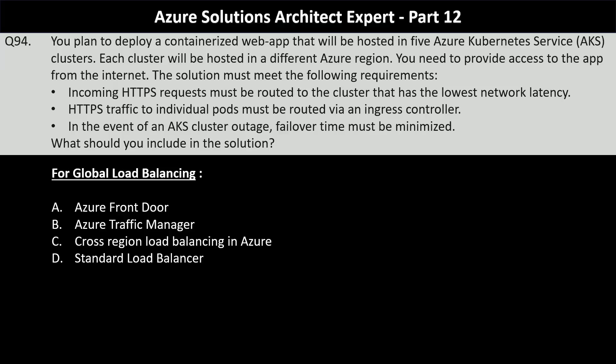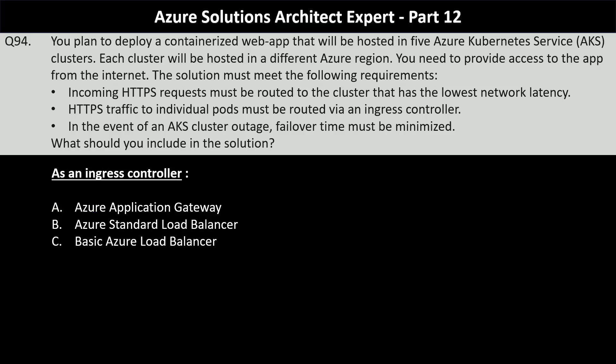For global load balancing, your options are Azure Front Door, Azure Traffic Manager, cross-region load balancing in Azure, or standard load balancer. Azure Front Door provides application-level routing to route HTTPS traffic to the backend with the lowest network latency. It integrates seamlessly with AKS ingress controllers to route HTTPS traffic directly to ports within AKS clusters and has near-instant failover capabilities minimizing downtime in the event of an AKS cluster outage.